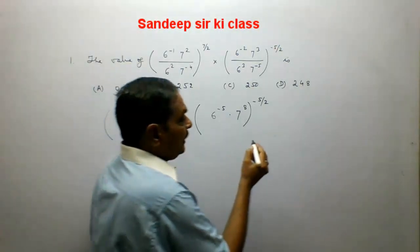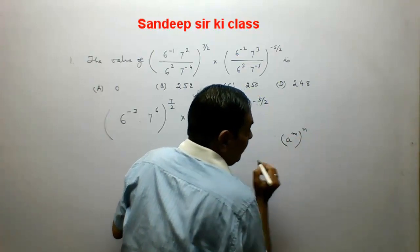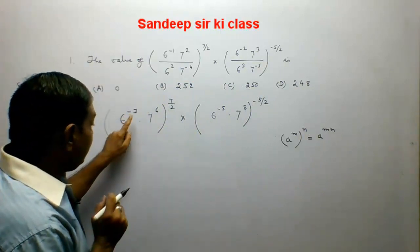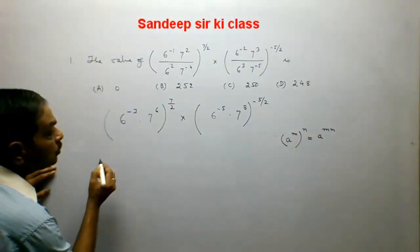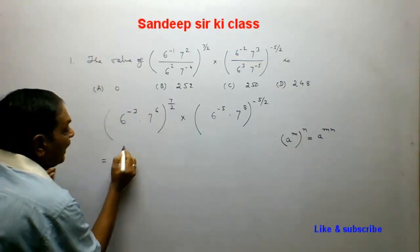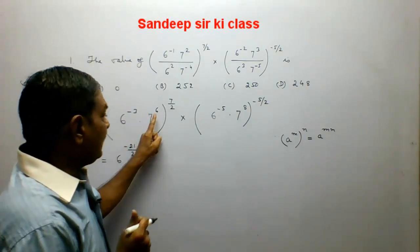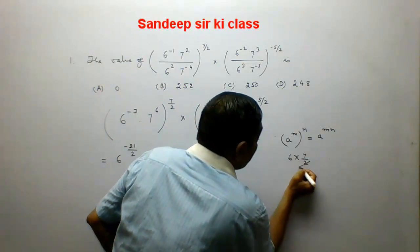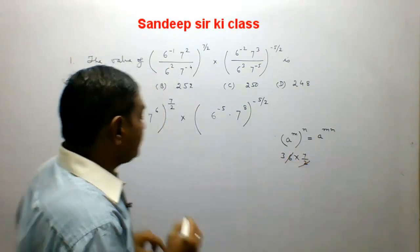We know from the theory of indices that if we have a to the power m, whole to the power n, this becomes a to the power m into n. So here minus 3 will multiply 7 upon 2, giving 6 to the power minus 21 upon 2. And 6 multiplied by 7 by 2: this cancels, becoming 3 into 7 which equals 21. So 7 will have power 21.